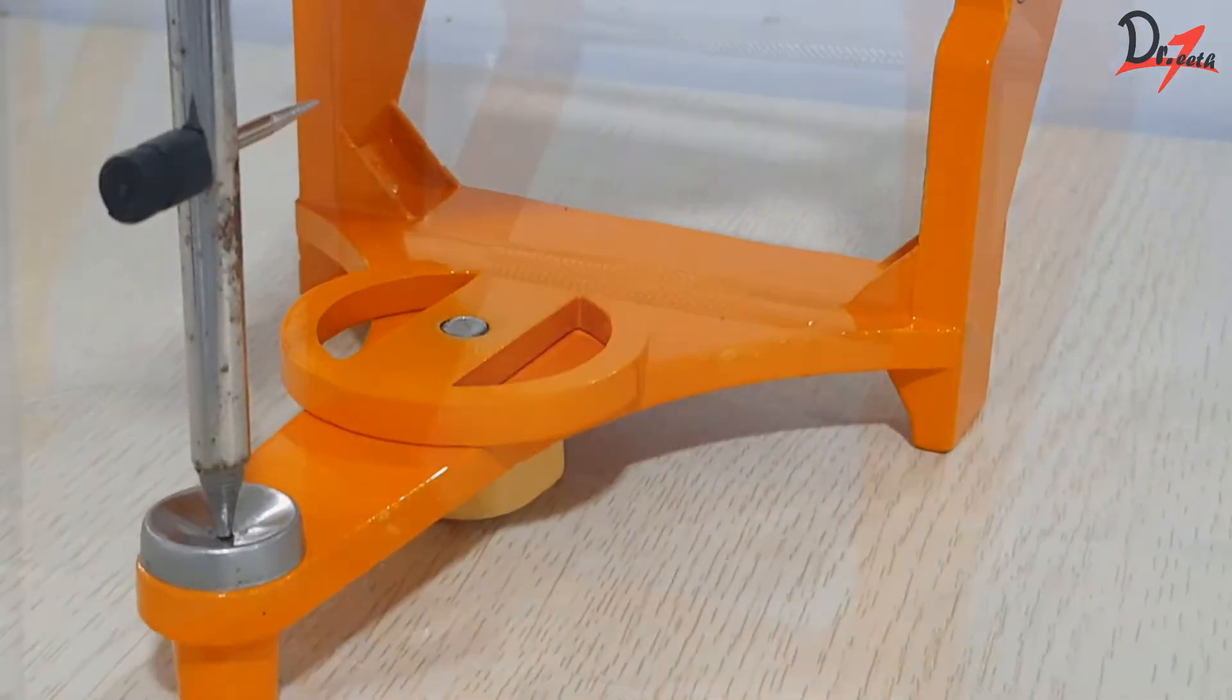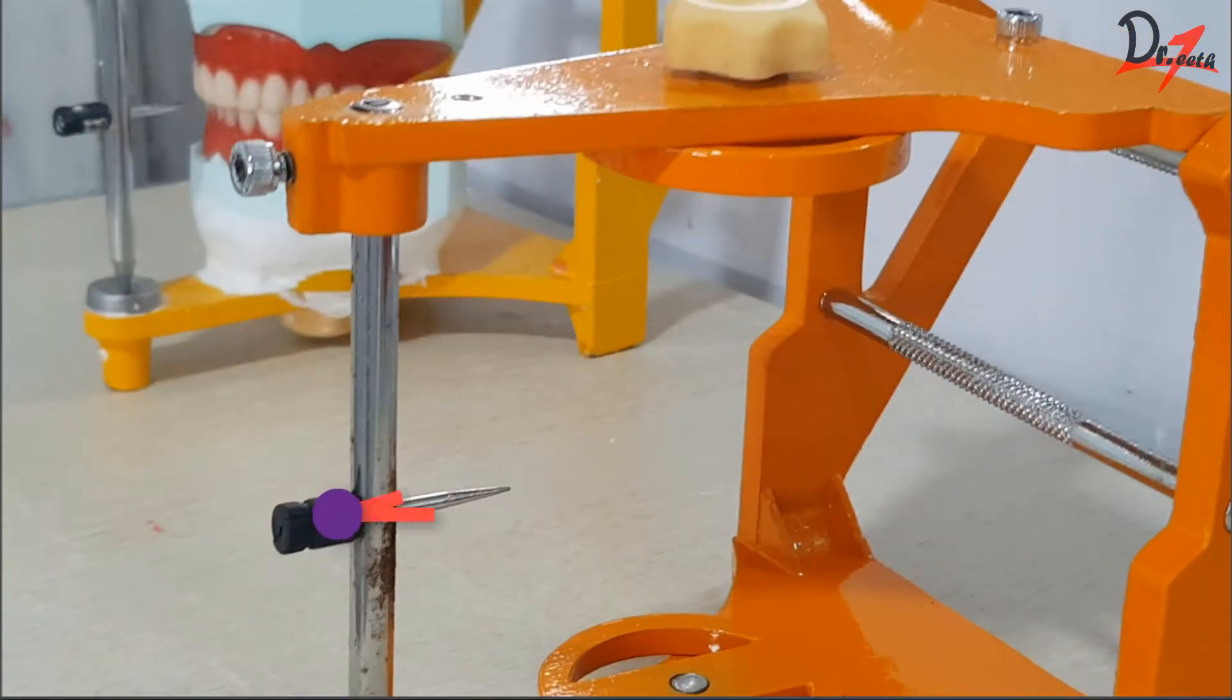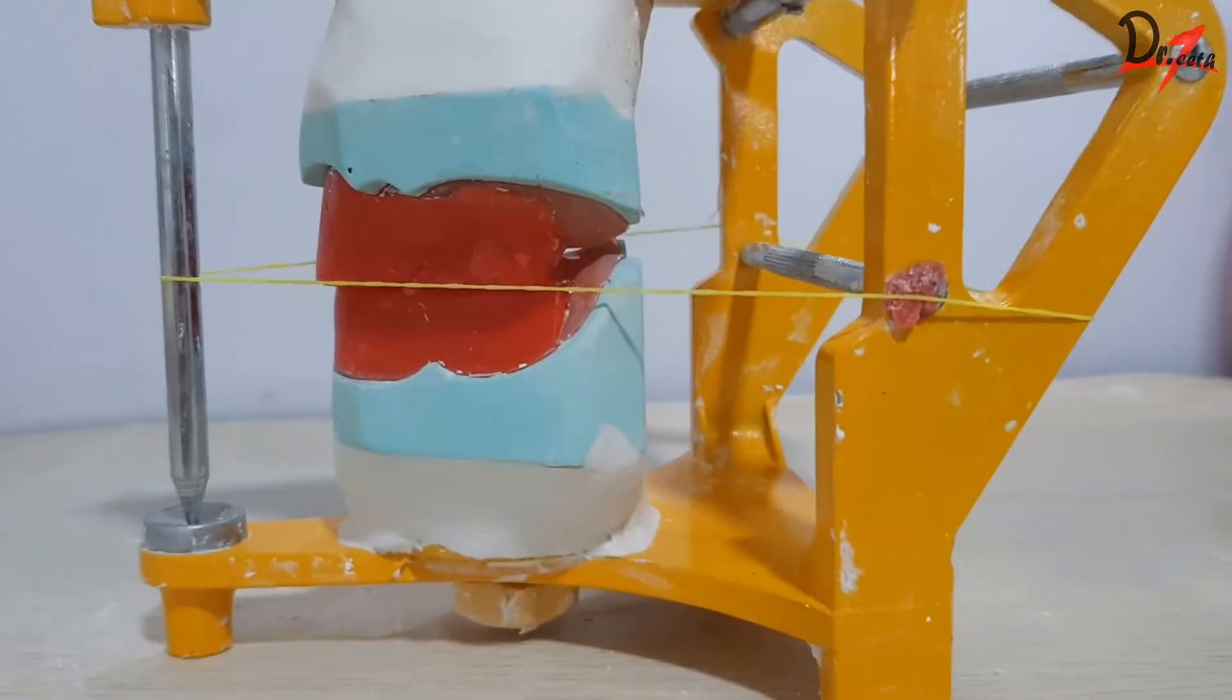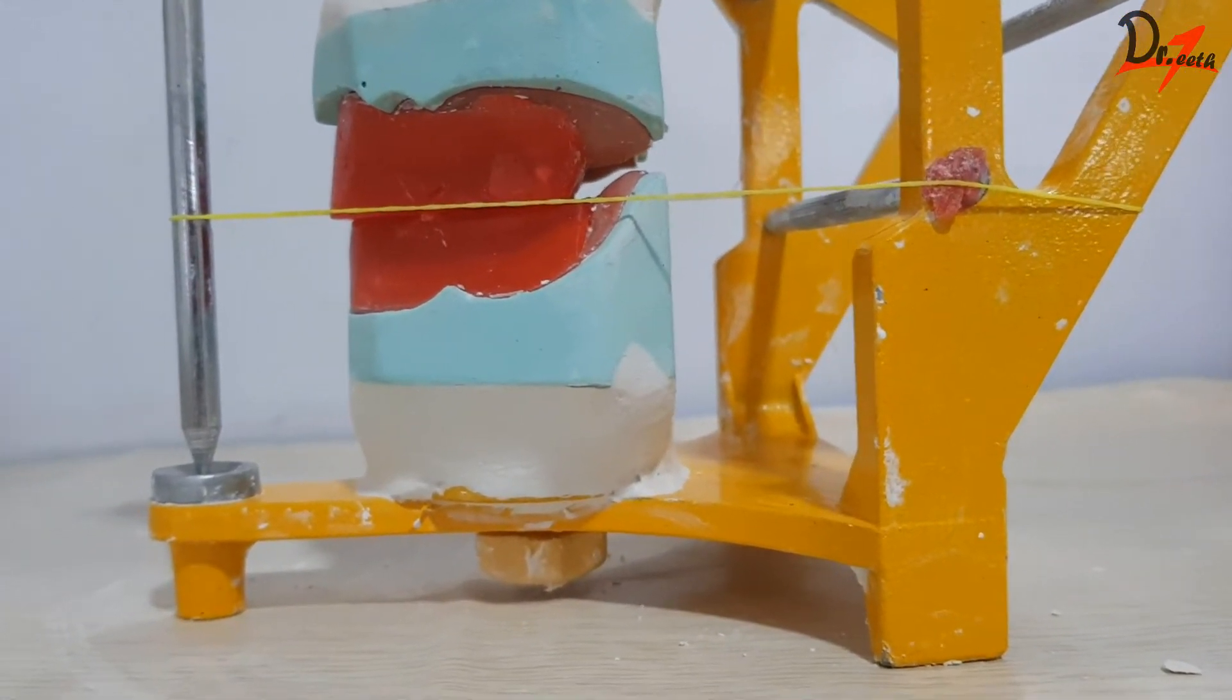Now, in the mean value articulator, a plane is formed by the central pin anteriorly and the reference rod posteriorly, as you can see here. So, while mounting, we have to make sure that the plane of the occlusal rim should coincide with the plane formed by the articulator.